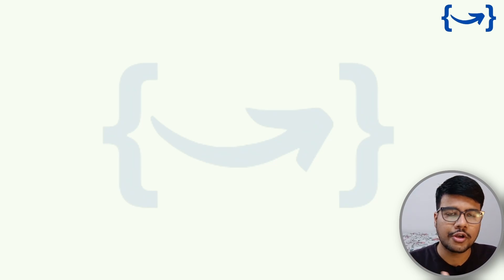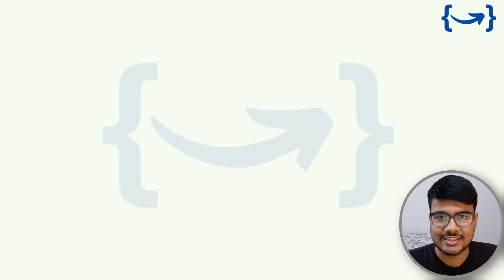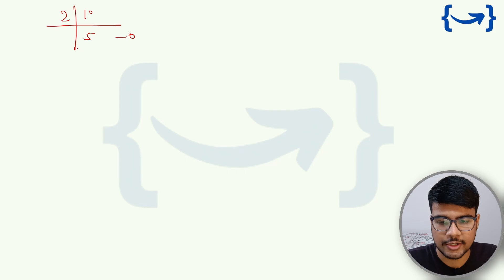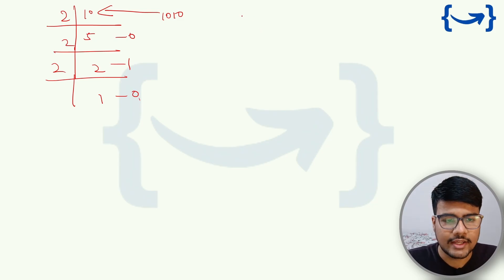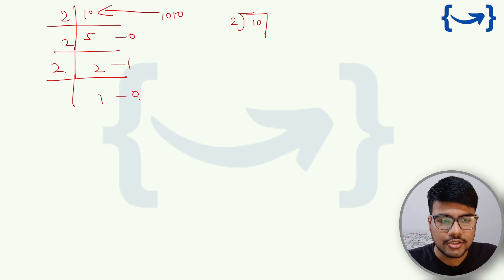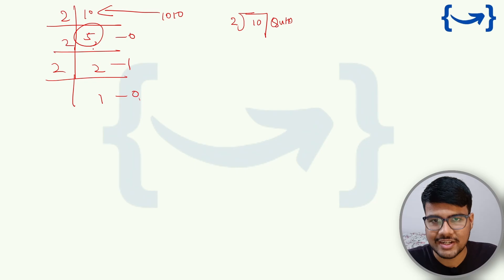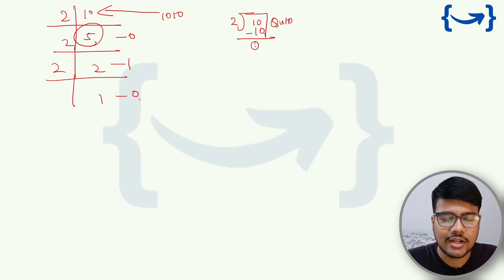If you've studied electronics or computer organization, you know how to find the binary equivalent of a decimal number. For example, to convert 10: 2×5=10 remainder 0, 2×2=4 remainder 1 (since 5−4=1), and 2×1=2 remainder 0 — so the binary is 1010. The pattern is clear: divide the decimal number by 2, track the remainder as the current bit, and carry forward the quotient.